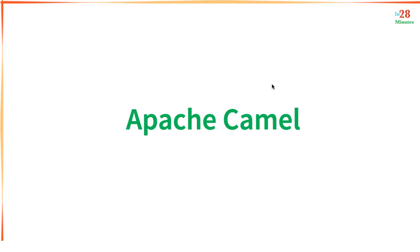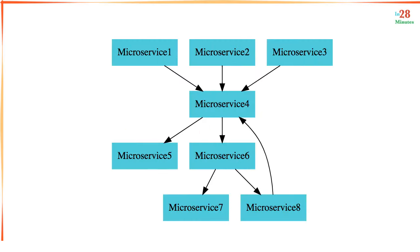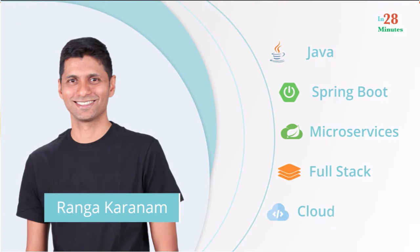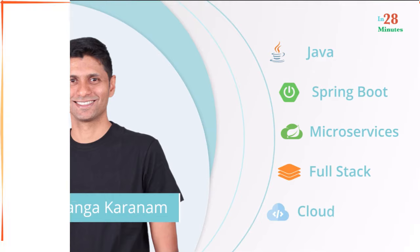Are you using microservices architecture? Are you having trouble implementing integration patterns between microservices and different applications? Enterprise integrations can be very complex. Apache Camel simplifies enterprise integrations and makes it easy to communicate with queues, databases, file systems, and a number of other endpoints. I am Ranga Karanam, founder of In28Minutes and creator of some of the world's most popular courses on microservices, cloud, and DevOps.